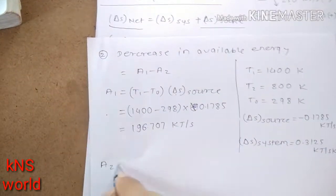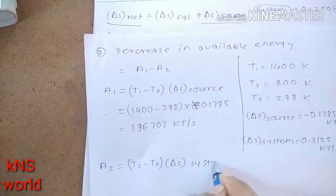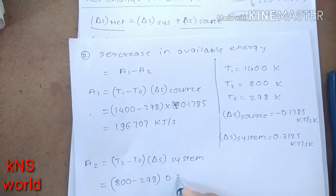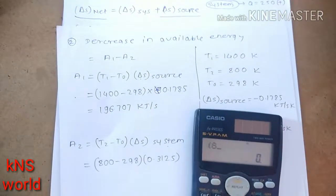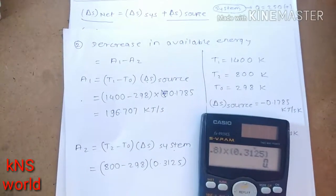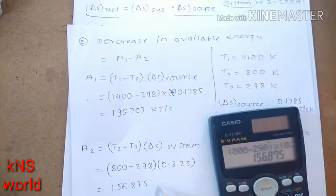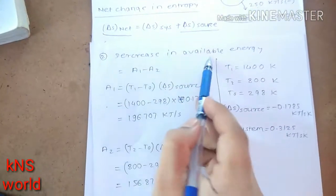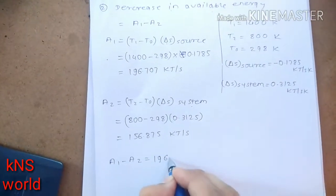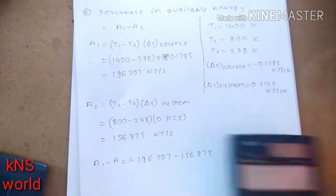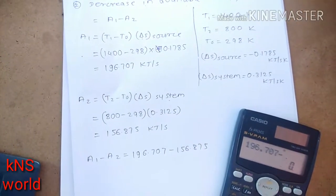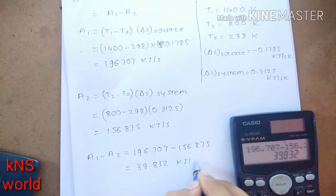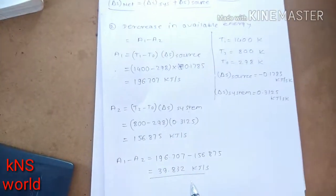Calculating A2: T2 minus T0 times delta S_system. That is 800 minus 298, times 0.3125 — which equals 156.875 kilojoules per second. Finally, the decrease in available energy is A1 minus A2: 196.707 minus 156.875, which equals 39.832 kilojoules per second.